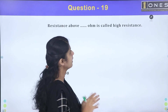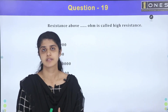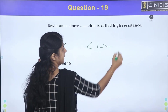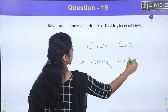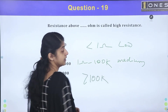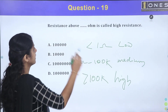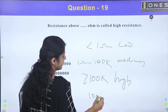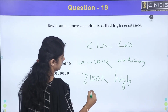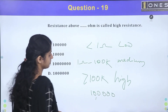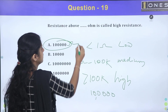Resistance above a certain value is called high resistance. Less than 1 ohm is called low resistance. From 1 ohm to 100 kilo-ohms is called medium resistance. Above 100 kilo-ohms is called high resistance. So 100k equals 10 raised to the power 5, and the correct answer for high resistance is above 100k ohms.